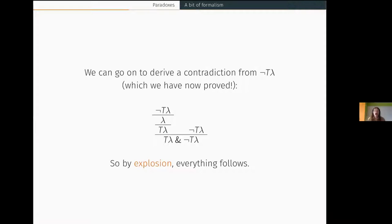You might say: okay, the liar sentence is both true and not true — but who cares? Many logical systems involve the principle called explosion, which says that once you prove a contradiction, everything follows whatsoever. If that holds, we're in real trouble if we conclude that the liar sentence is both true and not true.